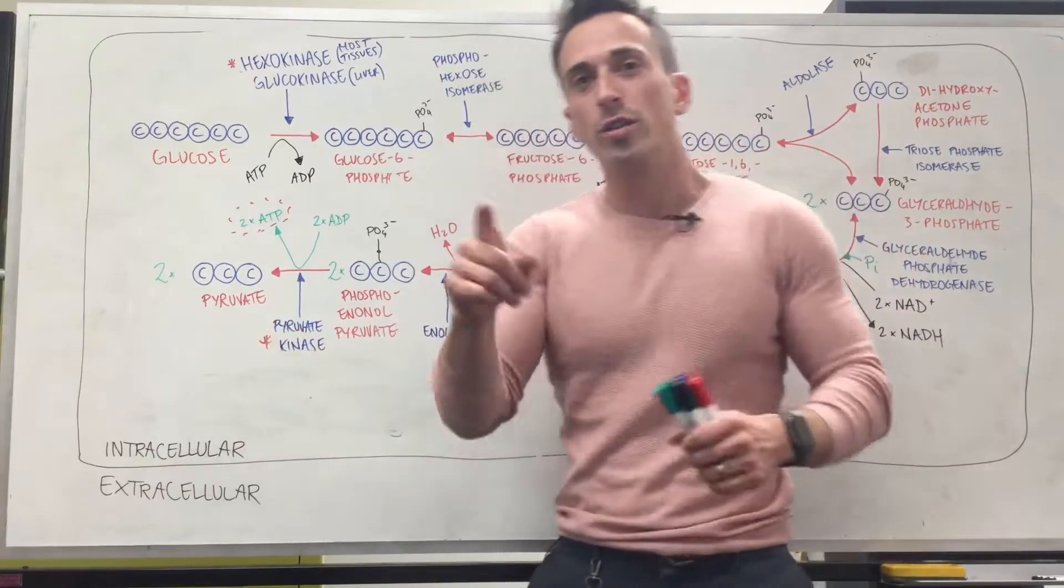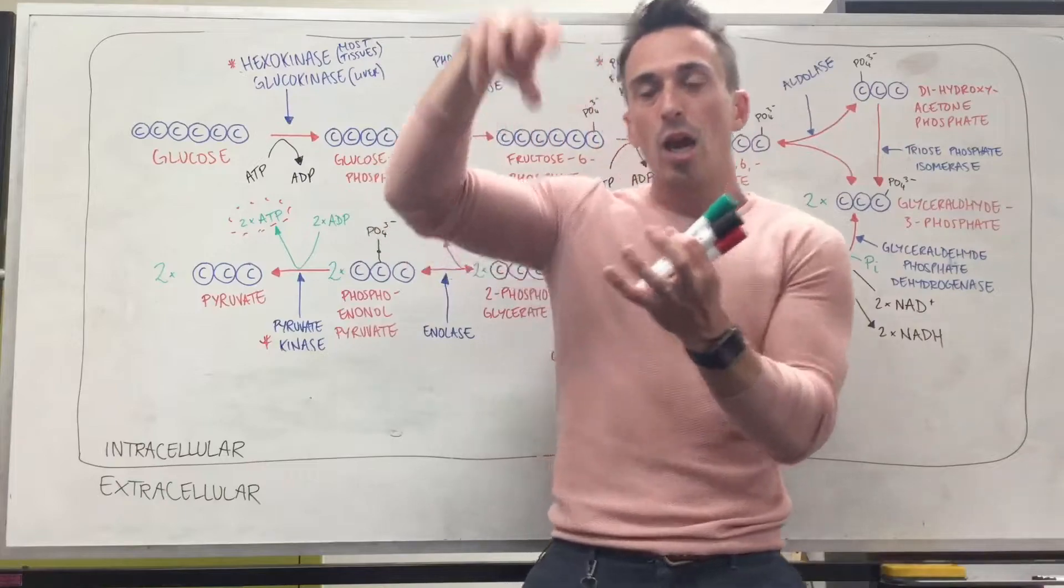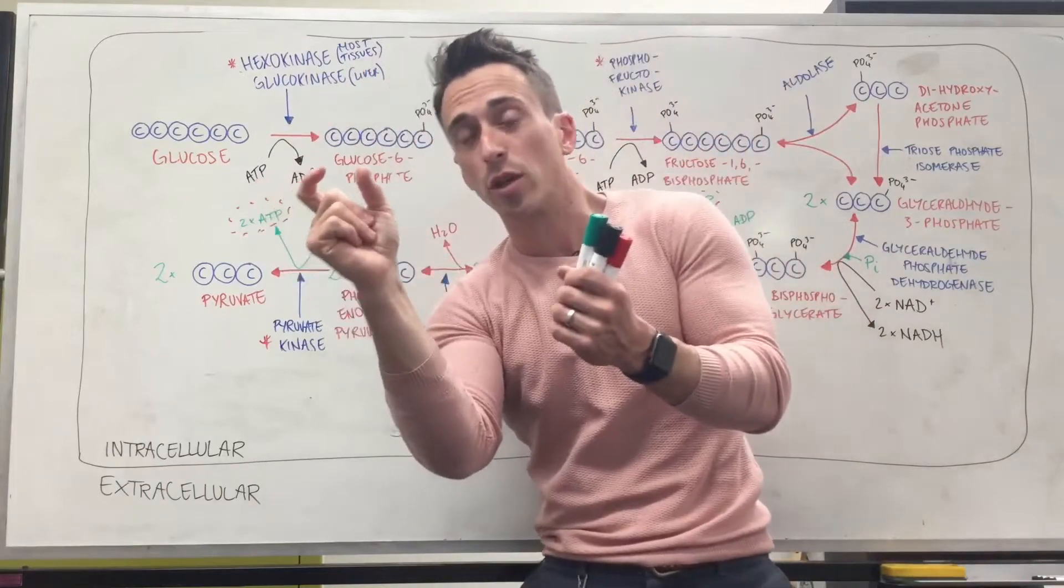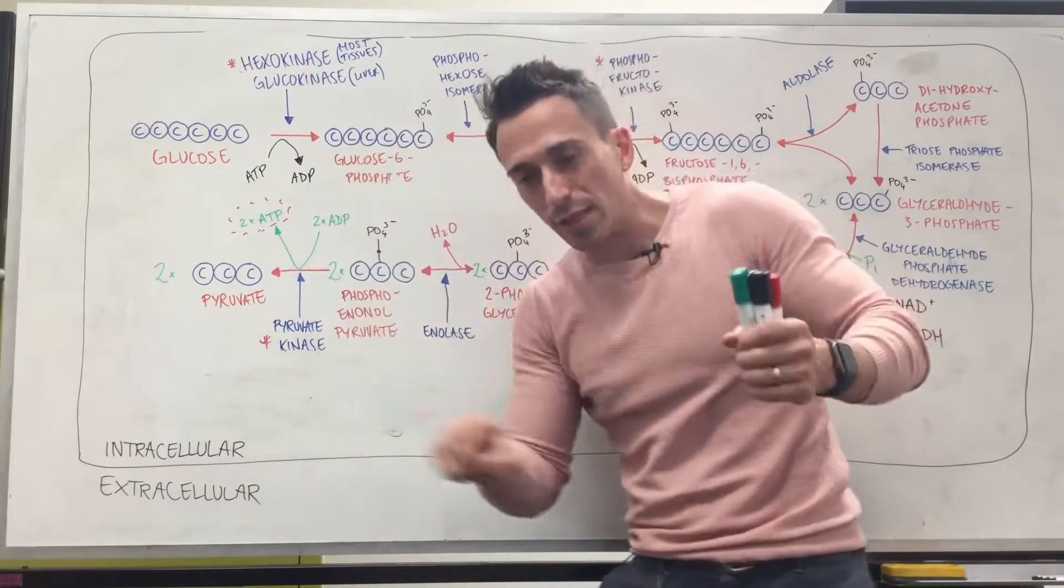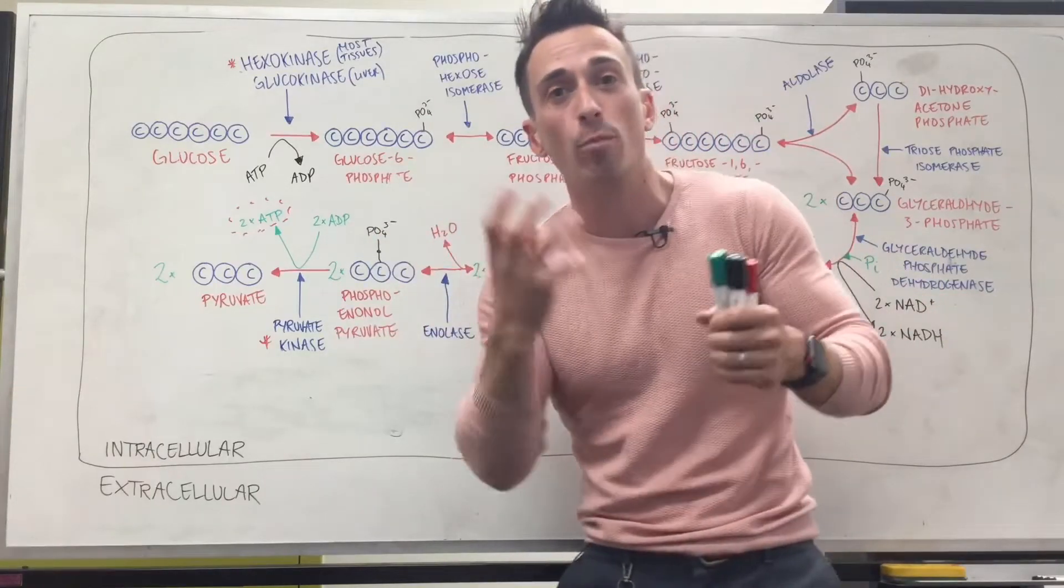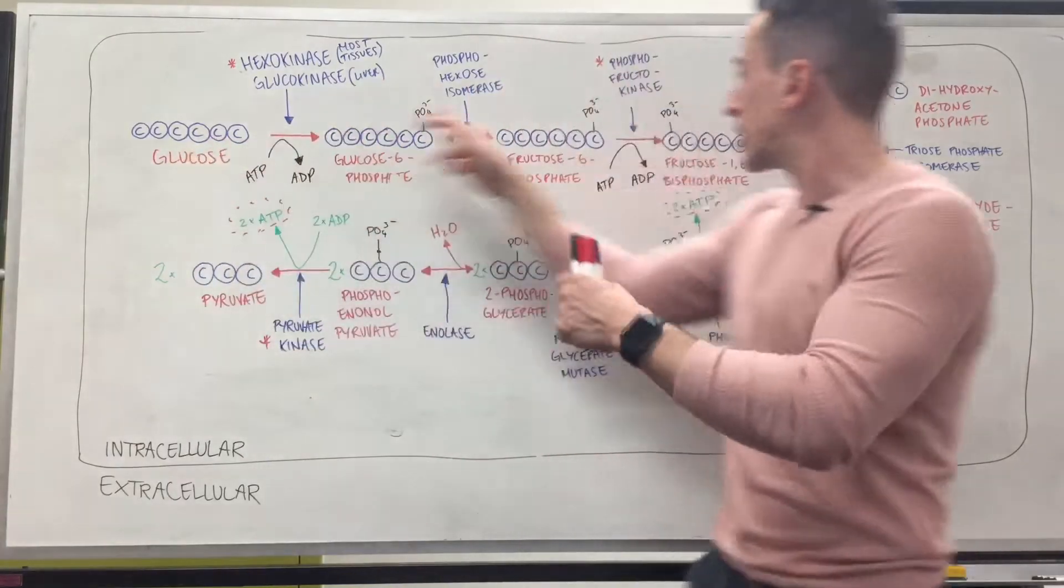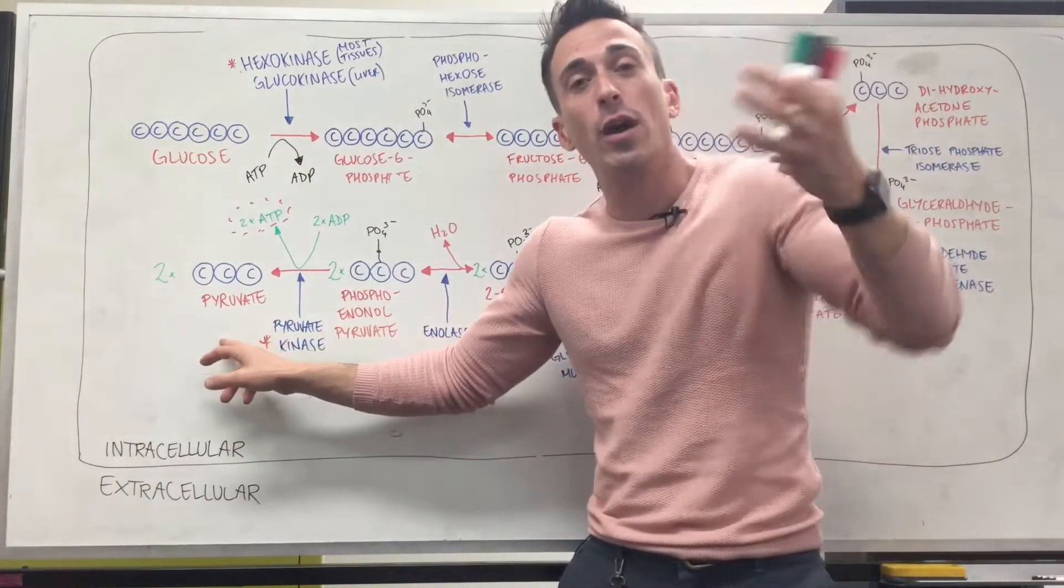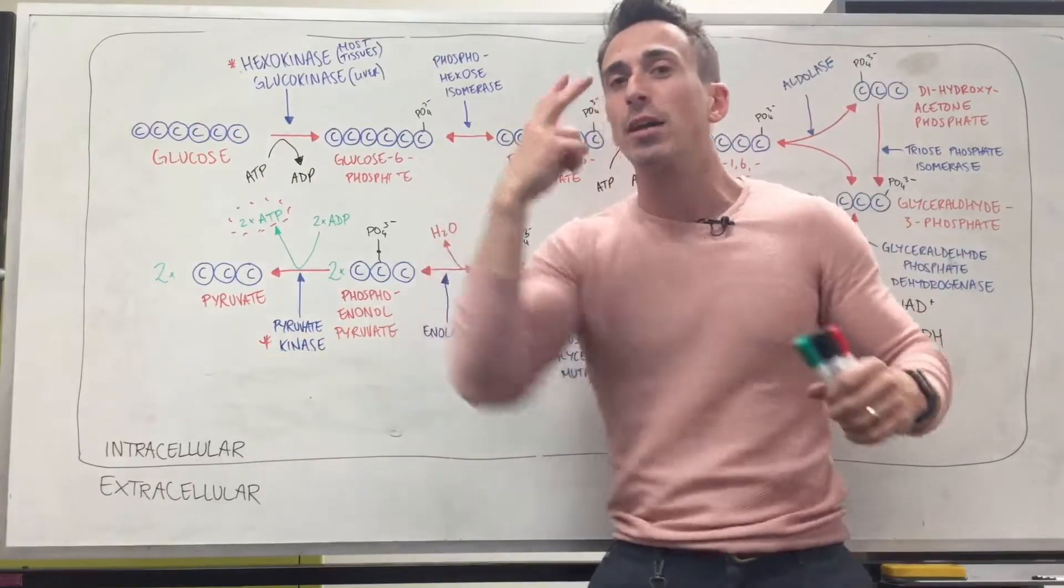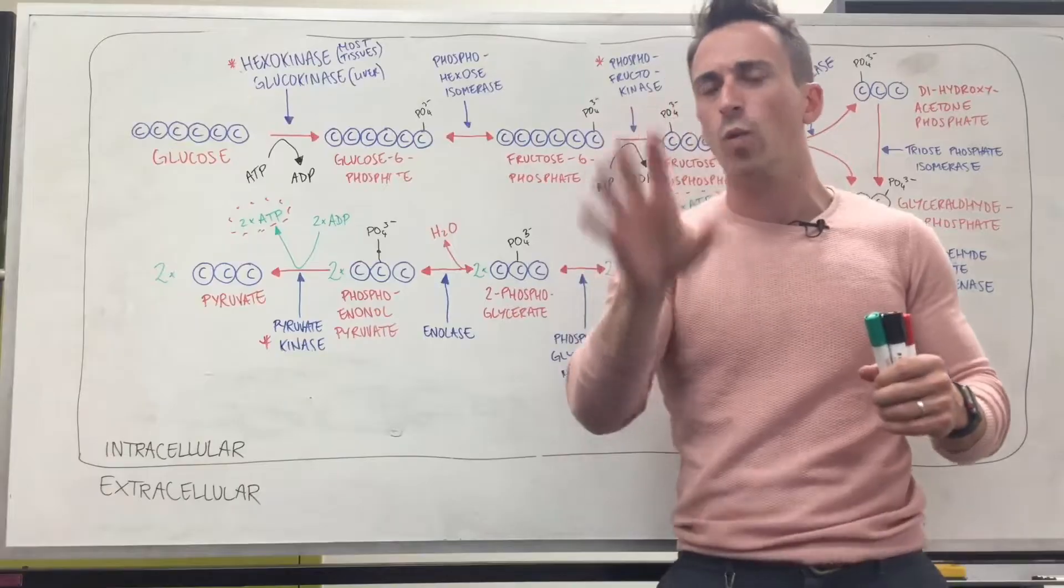So pyruvate turns into something called acetyl-CoA that binds with something called oxaloacetate and produces the first product of the Krebs cycle called citrate. There's multiple steps to this citric acid or Krebs cycle and it produces around about 32 to 34 molecules of ATP, that's energy. Now glucose turning into pyruvate produces some ATP or energy itself. It produces around about two ATP molecules or between two to four.